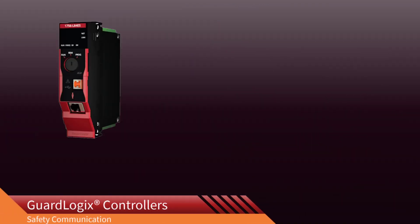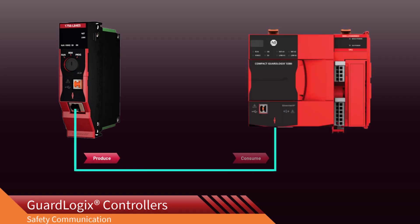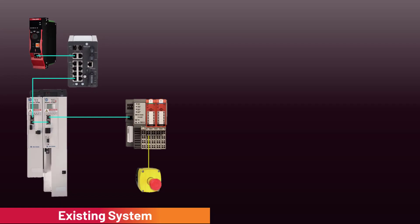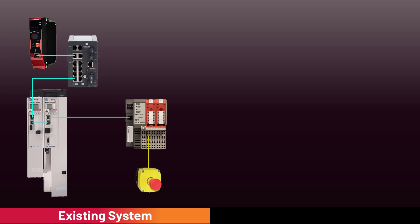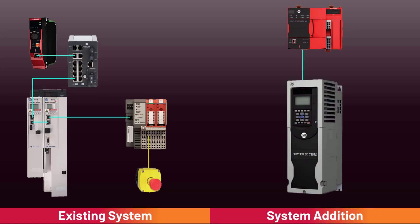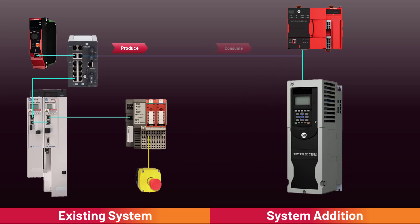Safety data from one GuardLogix controller can be sent to another GuardLogix controller using a produce and consume SIP safety network connection. This video will show the steps to set up and configure a safety produce and consume connection. In this example, a GuardLogix system with an emergency stop input exists on a machine, and a new machine section with a Compact GuardLogix and a PowerFlex 755 drive are going to be added. The new system is required to monitor and react to the existing emergency stop push button. A simple way to share safety data between controllers is to produce and consume safety tags.